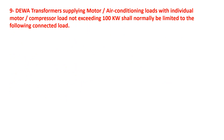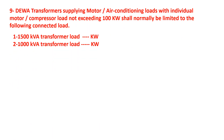Question number nine: for a 1500 kVA transformer, the load is dash kilowatt; for a 1000 kVA transformer, the load is dash kilowatt. If a transformer is supplying motor or air conditioning load, with individual motor or compressor load not exceeding 100 kilowatt, the connected load shall normally be limited to the following. How many kilowatts apply to each transformer rating? Answers will be posted.